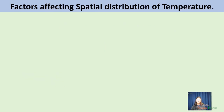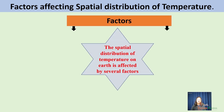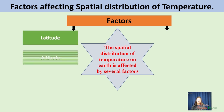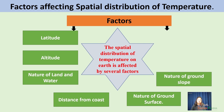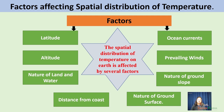The spatial distribution of temperature is affected by several factors: latitude, altitude, nature of land and water, distance from coast, nature of ground surface, nature of ground slope, prevailing winds, and ocean currents. All these factors develop conditions which affect and control the spatial distribution of temperature. We will now discuss all these factors one by one and understand how each factor affects the spatial distribution of temperature.